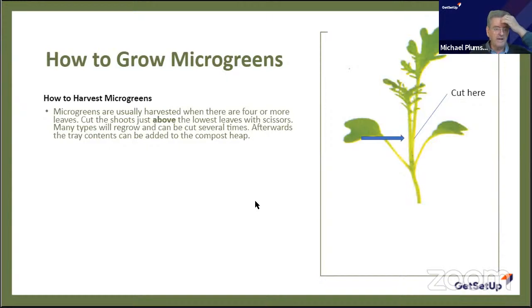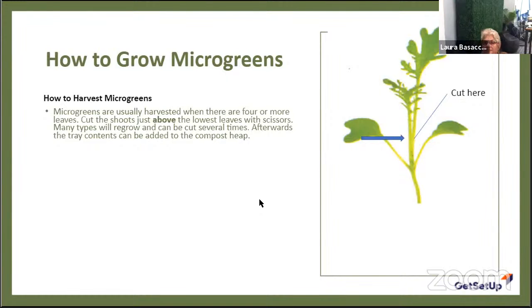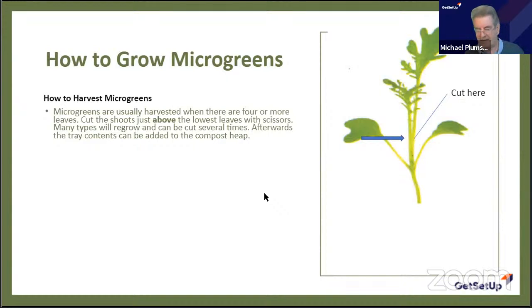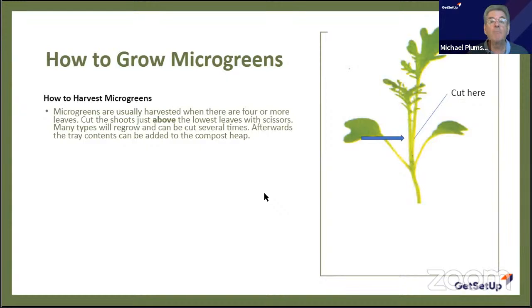Now I'll go through how to grow microgreens, starting with harvesting. You can get more than one harvest from most microgreens — not all, but most. You can get three or four harvests from the same seed. You've got to look after them and appreciate them.